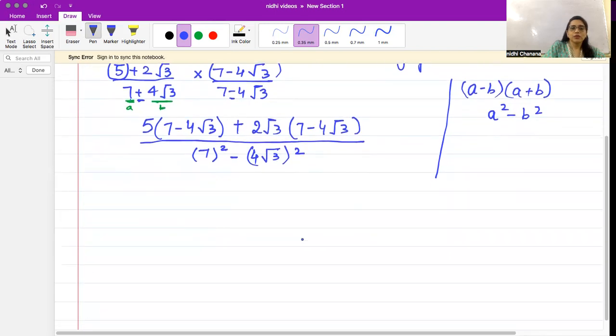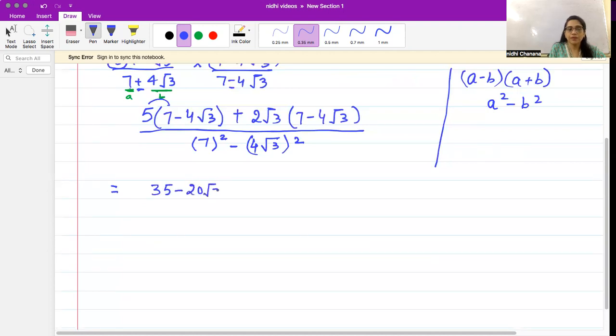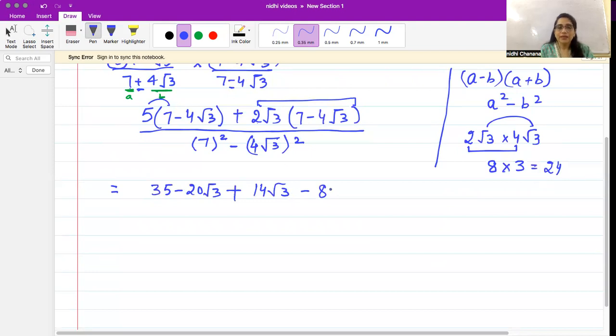Now let's see how we solve the numerator. For the numerator we'll do normal multiplication - just open the bracket. So we'll write 35 - 20√3 plus... now let me solve this. This would be 7 times 2 is 14√3 minus 4 times 2 is 8. And then when you multiply 2√3 by 4√3, first 4 and 2 gives you 8, then √3 times √3 gives you 3, which is 8 times 3 equals 24.